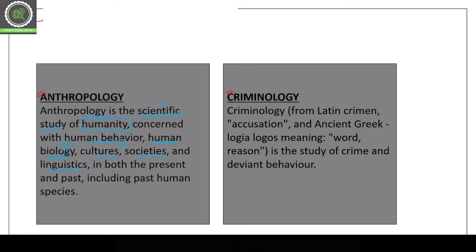In anthropology, we learn about social and biological evolution, including linguistics in the present and past. We study present and past human species — what was the development of humans, physically and socially. Criminology is a Latin-Greek term. The Latin root 'crimen' means crime, and the Greek word 'logos' means study. So criminology is the study and understanding of crime and criminal behavior.